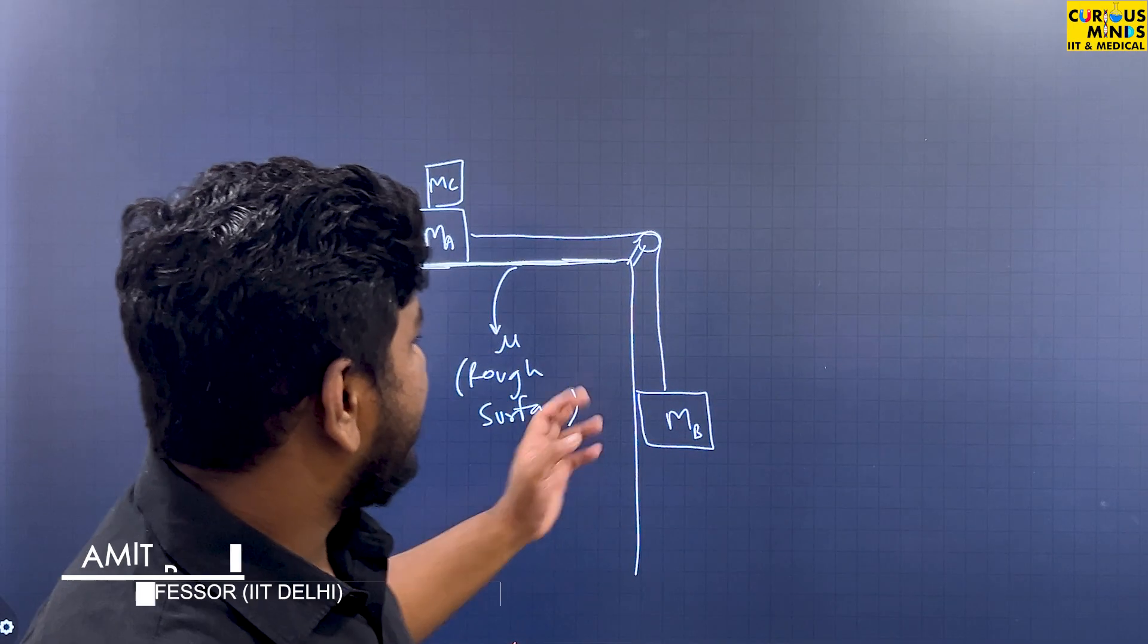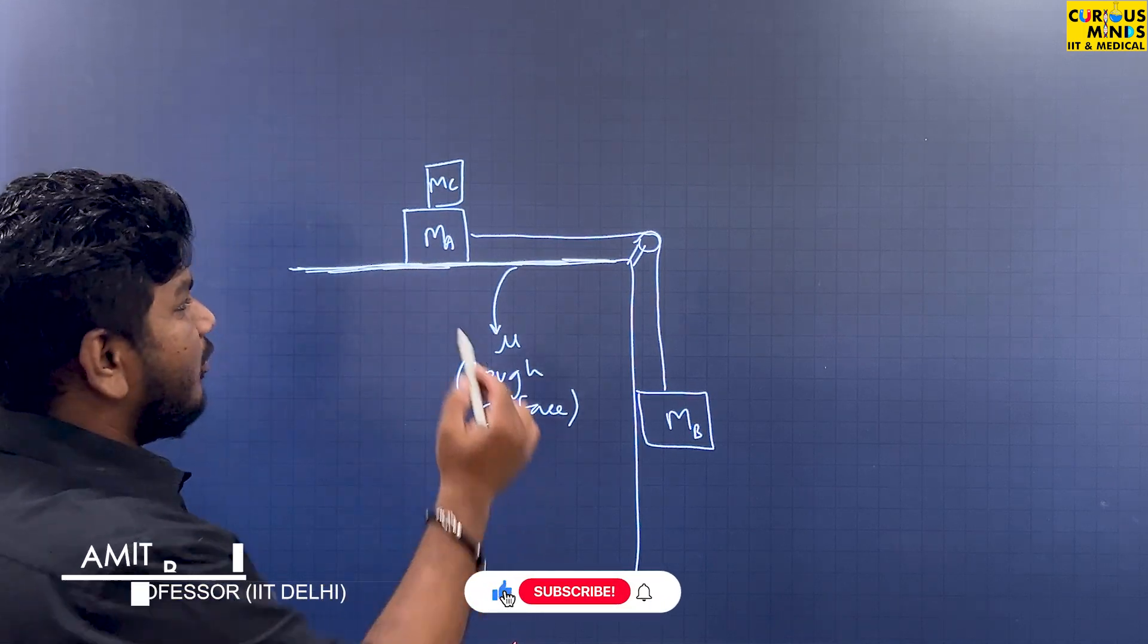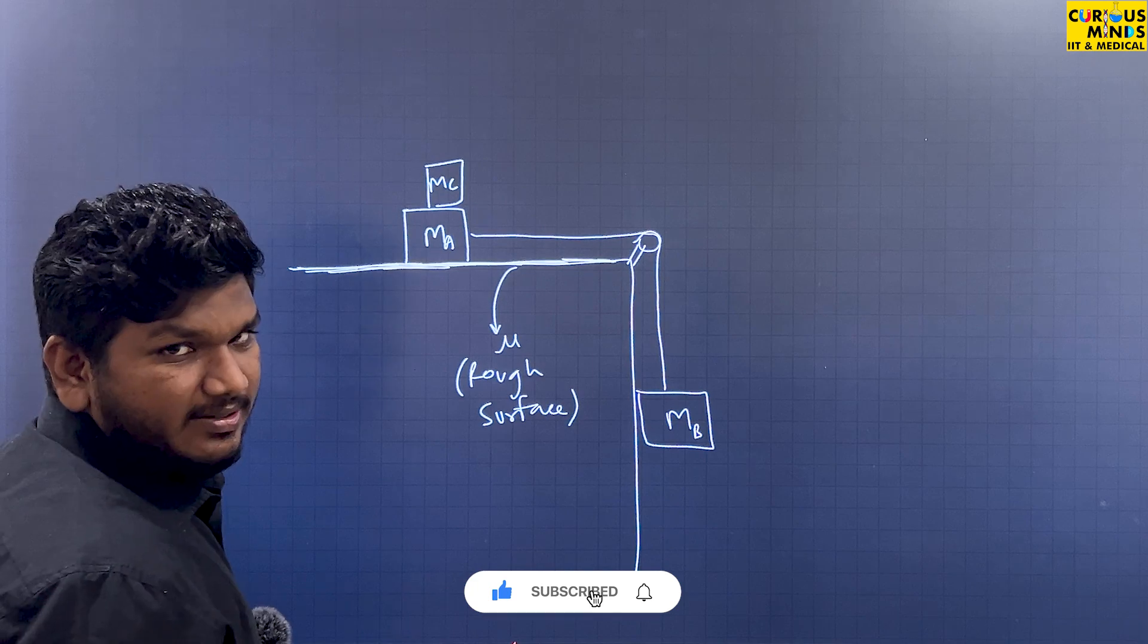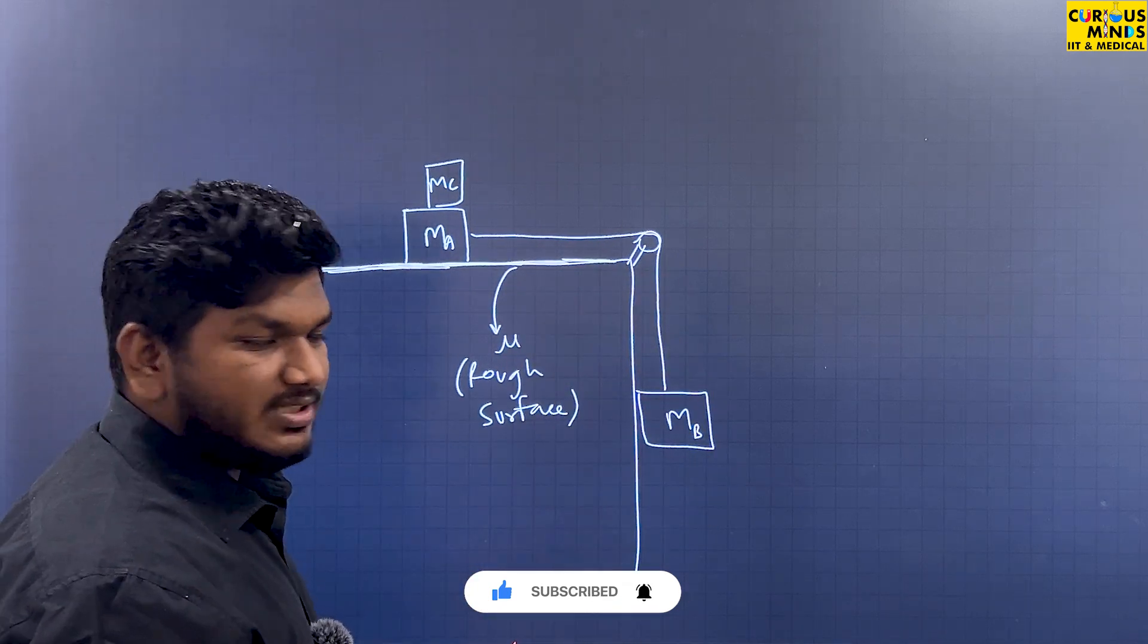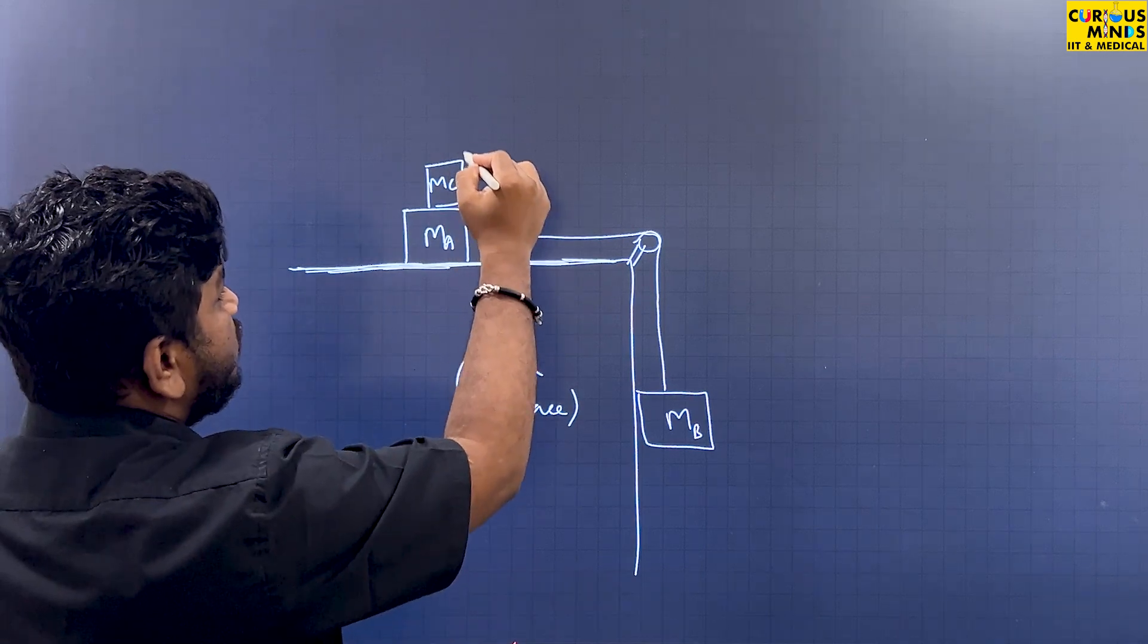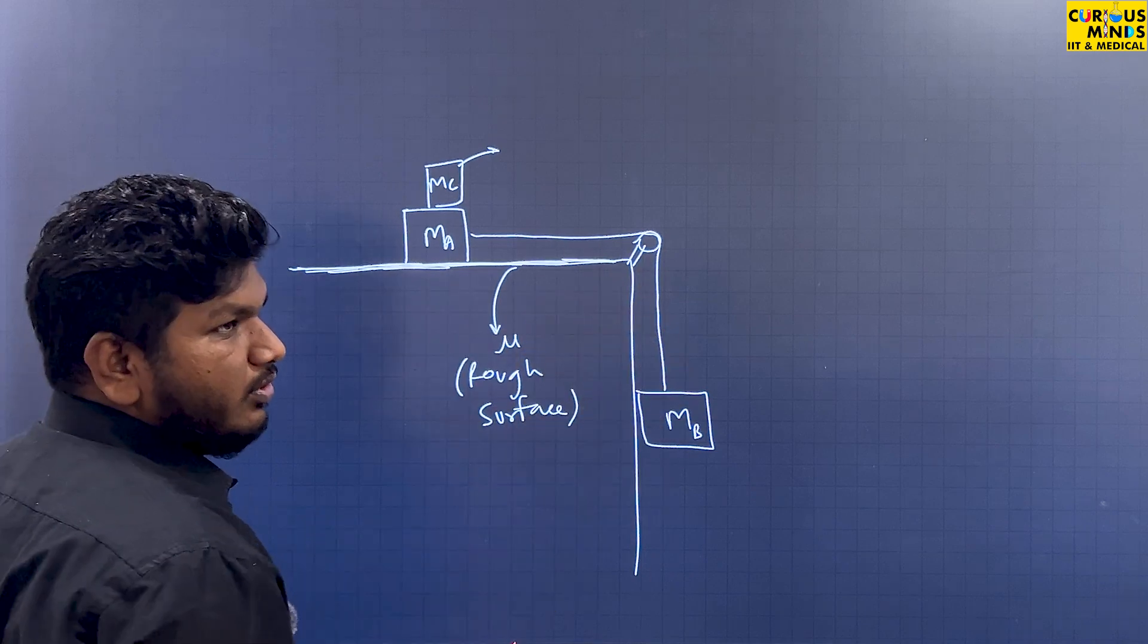Dear students, we are here with a new problem. The question is that you are given a block of mass A and a block of mass B, both attached with strings, and you are asked what should be the mass of this part so that the block doesn't move.